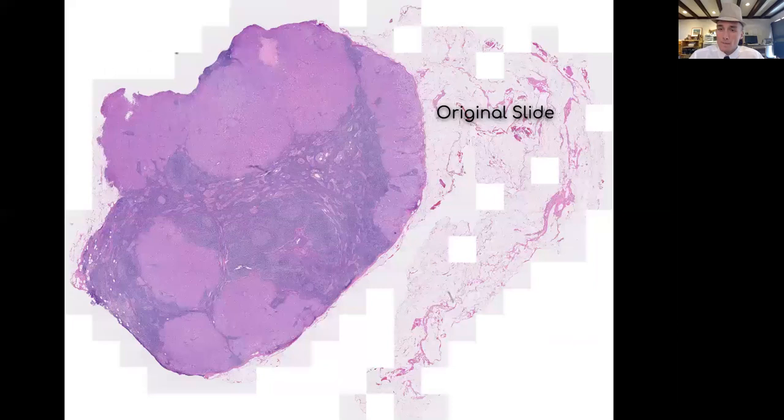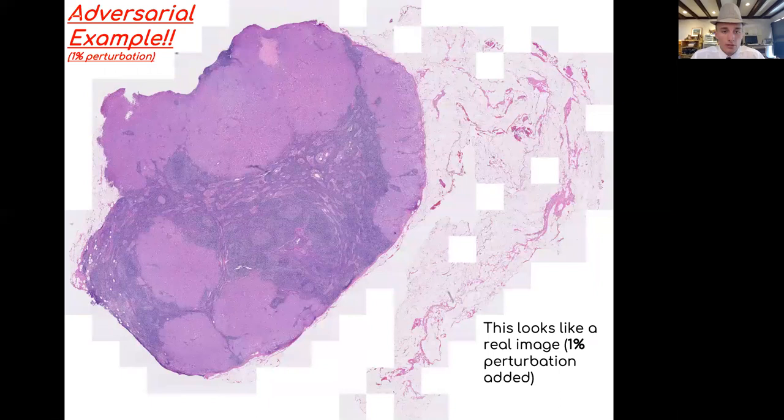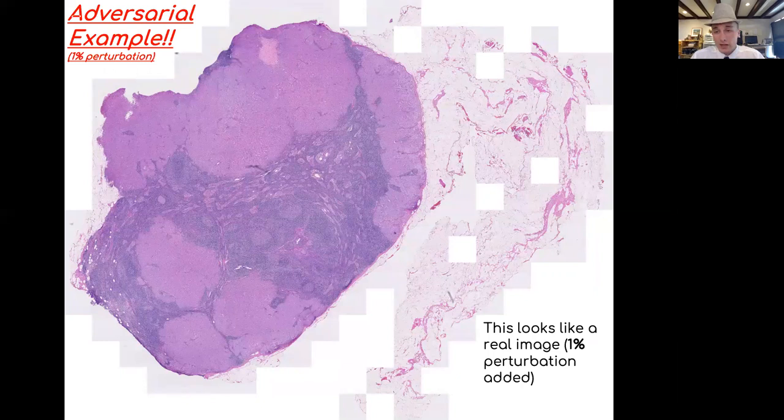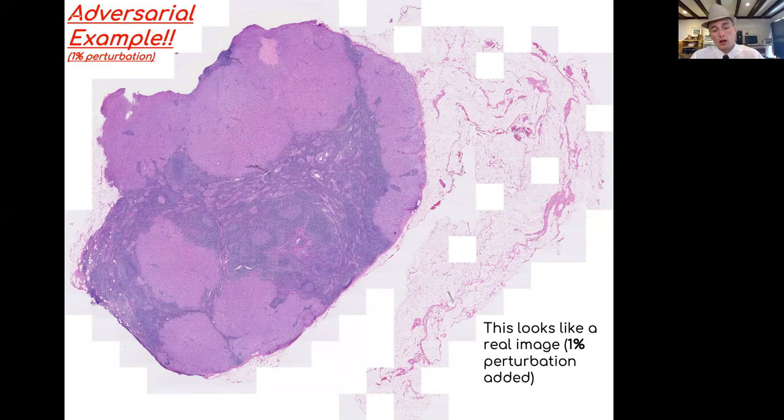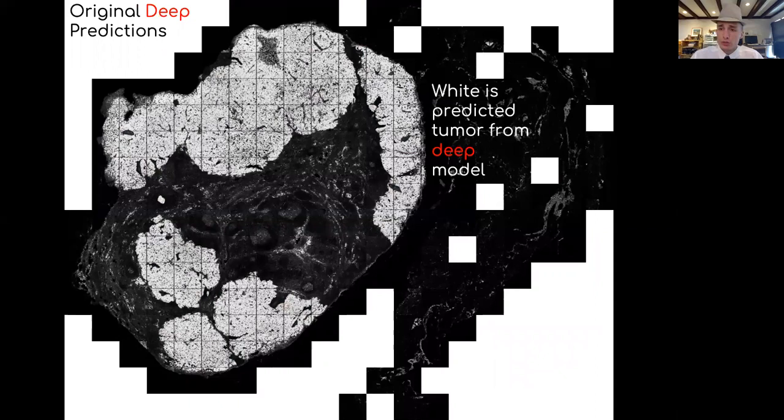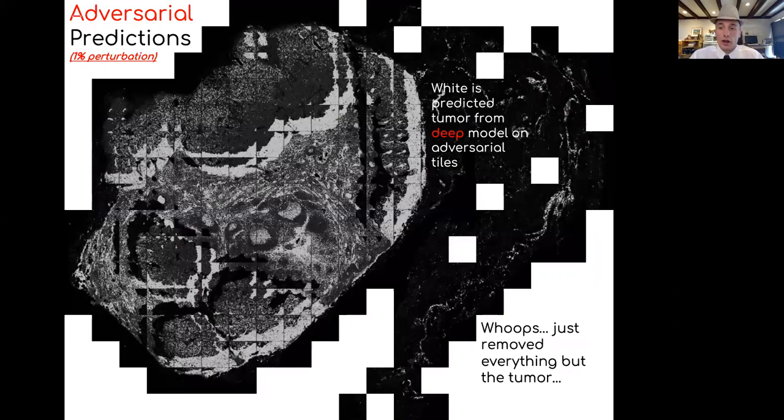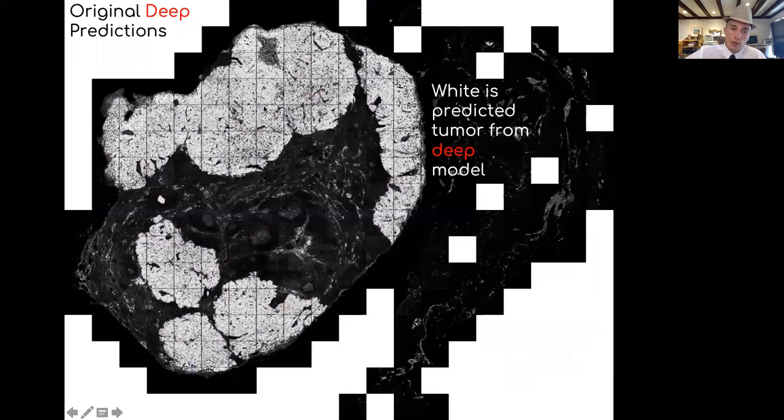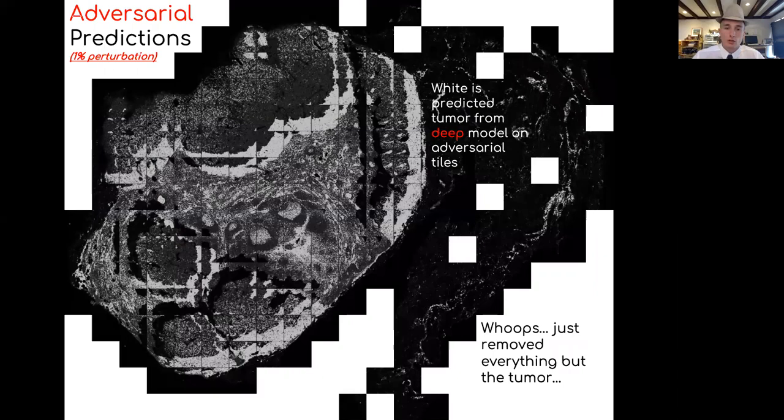Now I'm going to attack my deep model. Here's the original slide. Here's the attack. There's a tiny difference - you can barely even see the difference. If you were a pathologist, you probably wouldn't even notice this either because it's just a 1% change on the image. Here's my deep model's original prediction with no perturbation, no adversarial example added. Here's after I added the 1% change to the image. It basically flipped where it was saying tumor was. Now it has white where it should be black and black where it should be white. It's basically inverted itself.